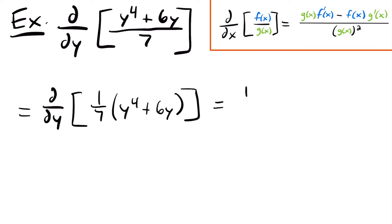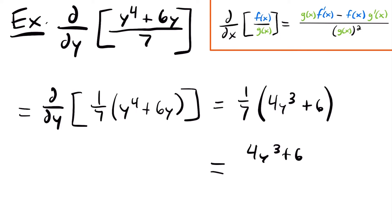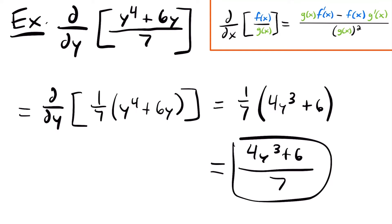We can pull that 1/7 out and now take a derivative using our power rule. This will be equal to 1/7 times 4 times y to the third power — that would be the derivative of y to the fourth. We multiply by our exponent and then subtract 1 from our exponent. And then we'll have plus 6, because the derivative of 6y would just be 6. We can simplify by writing 4y cubed plus 6 divided by 7. We didn't need to use the quotient rule here because there were no variables in our denominator; we used the simpler power rule instead.